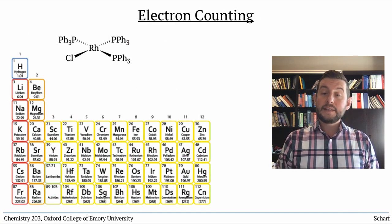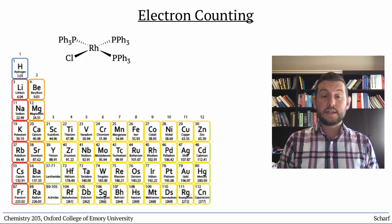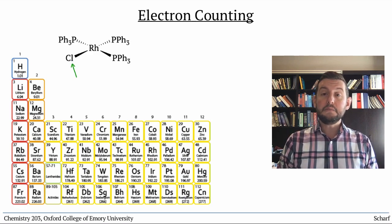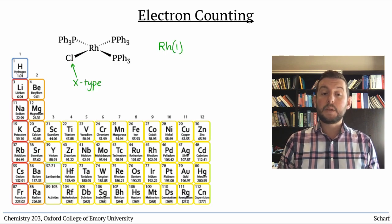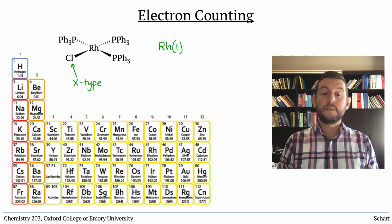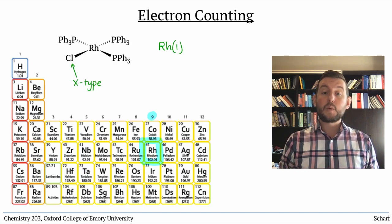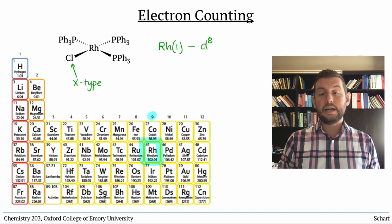To determine the d-electron count of the metal, we just need to know the oxidation state. This complex has only one X-type ligand, and no overall charge, so the rhodium is in the plus one oxidation state. Since rhodium is in column 9, with a plus one oxidation state, it's a d8 ion.